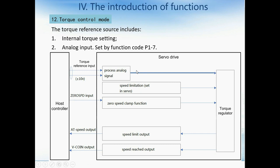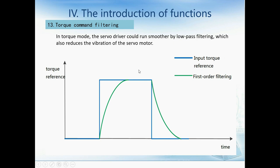Now we talk about torque control mode. The torque reference source includes internal torque setting, and another source is the analog input set by function code P1-7. The torque command also has filtering settings. In torque mode, the servo drive can run smoother by low-pass filtering, which also reduces the vibration of the servo motor. The first-order filtering makes the curve smoother.